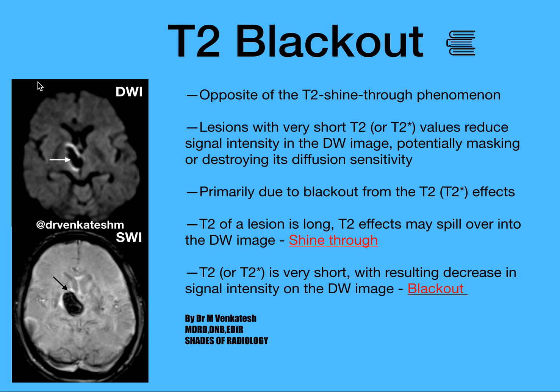Let us see with an example. This is a diffusion-weighted image. You can see a blackish signal here — it is completely hypointense, almost even more hypointense than CSF. So this is called T2 blackout.